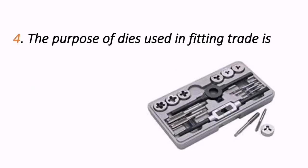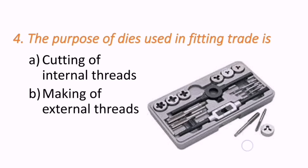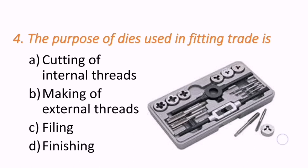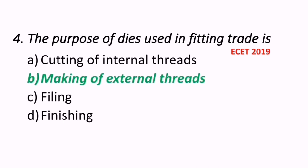Next question: the purpose of a die used in fitting trade is what? Options are cutting internal threads, making external threads, filing, or finishing. This question appeared in the 2019 ESET exam. The correct answer is making of external threads — dies are used to produce external threads.